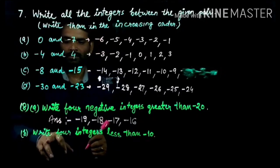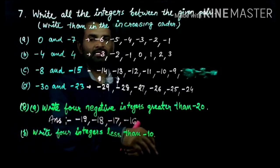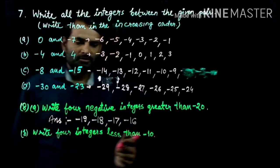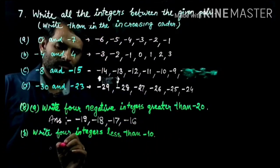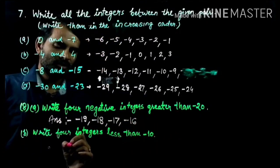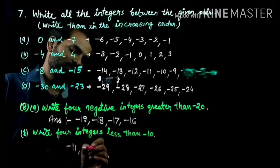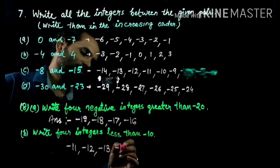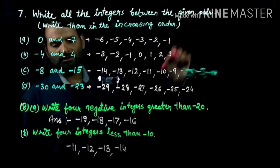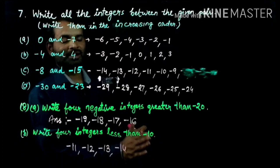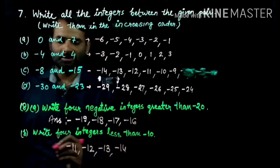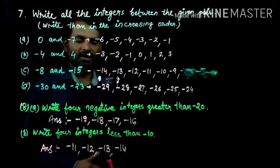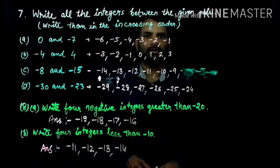Then write 4 integers less than minus 10. Less than minus 10 means: minus 11, minus 12, minus 13, and minus 14. You can write any number but do not write minus 9, minus 8, minus 7. The answer for the second part is minus 11, minus 12, minus 13, minus 14.